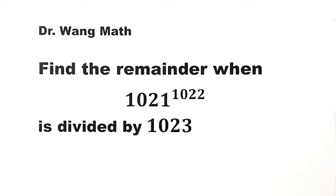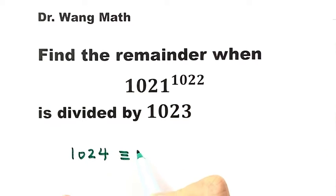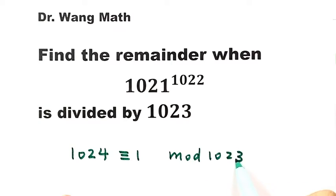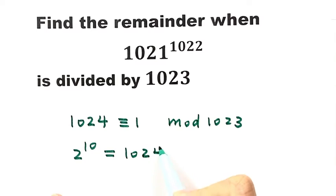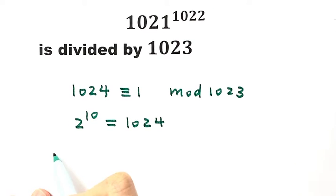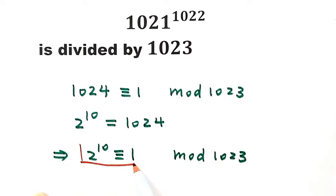We're going to start from 1024. 1024 has a remainder of 1 when divided by 1023. And also, 2 to the power of 10 equals 1024. So 2 to the power of 10 has a remainder of 1 when divided by 1023.